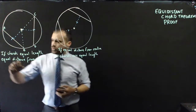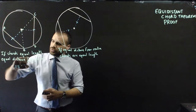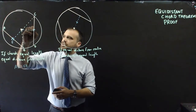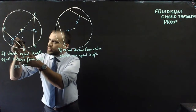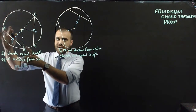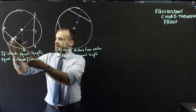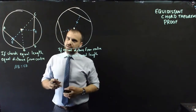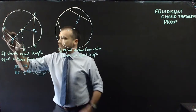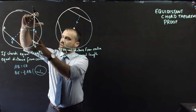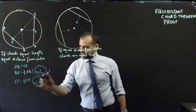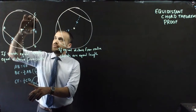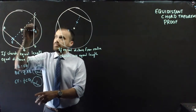We've been told that the chords are equal length, so we know that length AB is equal to length CD. Let's mark in a point E and a point F. I know that length EB is half of length AB, and the reason I know that is because a perpendicular line from the center to a chord bisects it — we've got that theorem. So BE equals half of AB. I can also say that CF equals half of CD for the same reason, which means that CF and BE are the same lengths.